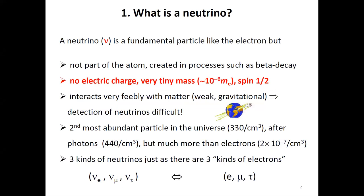What is a neutrino? A neutrino is a fundamental particle like the electron — just as the electron is a fundamental particle and is part of the atom. I think some part of the slide is cut on my screen. The bottom part shows three kinds of neutrinos — the E, mu, tau — which is cut in half on my screen.